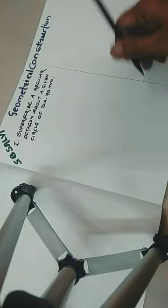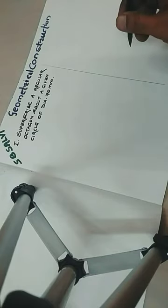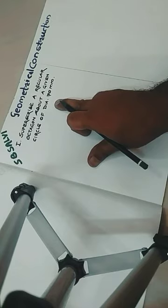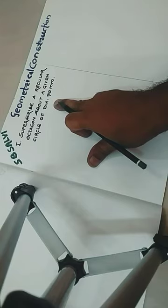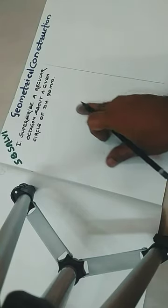Now the first one from this particular video is superscribe a regular octagon about a given circle of diameter 70 mm. Now first of all, this superscribe - circumscribing or superscribing or describing a regular polygon about a circle is nothing but the construction of a polygon keeping the sides tangential to the given circle.